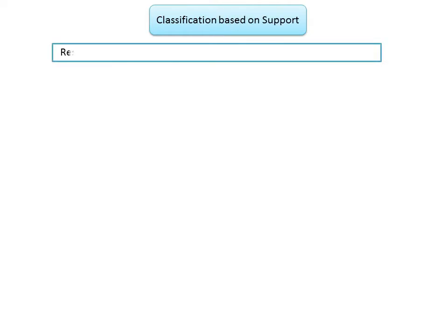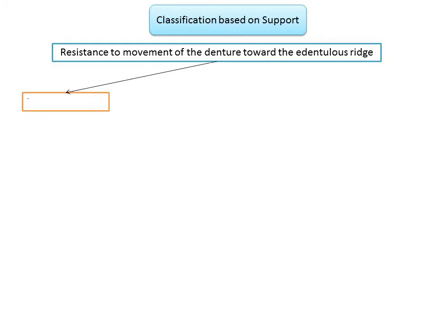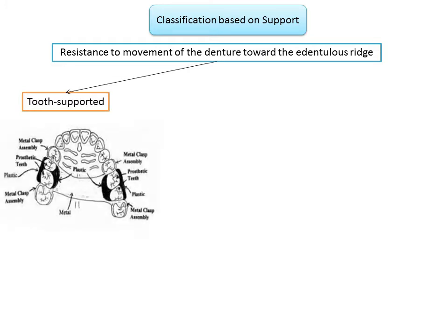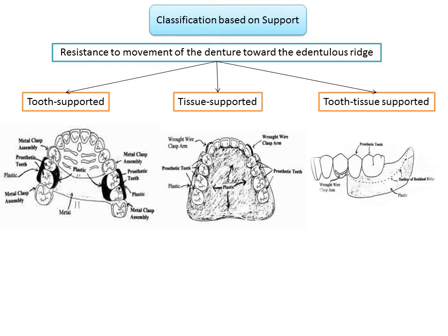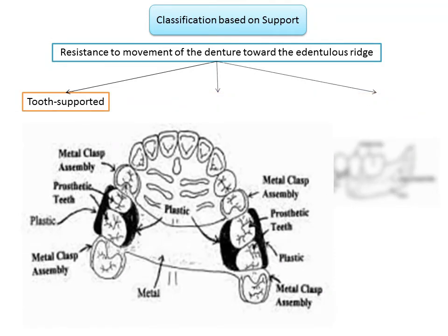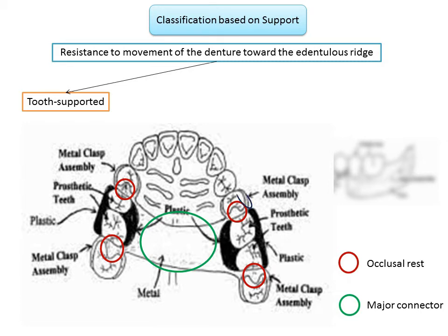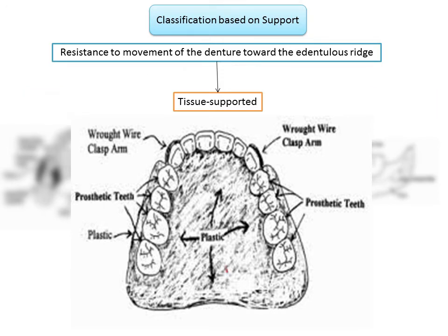Now let's look at classification of partially edentulous arches based on support. Support is the resistance to movement of the denture towards the edentulous ridge. There are three types of RPDs based on the tissues which provide support: tooth-supported, tissue-supported, and tooth-tissue supported. This is a simple and very meaningful classification because the principles of RPD design depend greatly on its supporting tissue. Tooth-supported RPDs receive all their support from the abutment teeth; most have a cast metal major connector, though sometimes a tooth-supported interim RPD can be constructed with a plastic major connector and rot-wire rests or transocclusal clasps. Tooth-supported RPDs do not move appreciably in function.